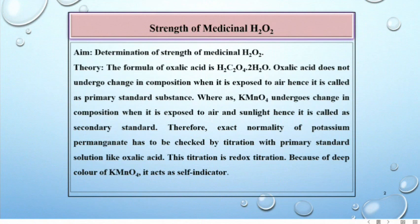Determination of Strength of Medicinal H2O2. The formula of oxalic acid is H2C2O4·2H2O. Oxalic acid does not undergo change in composition when exposed to air, hence it is called a primary standard substance. Whereas, permanganate undergoes change in composition when exposed to air and sunlight, hence it is called a secondary standard. Therefore, exact normality of potassium permanganate has to be checked by titration with primary standard solution like oxalic acid.